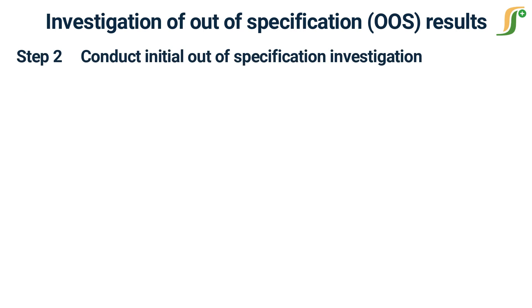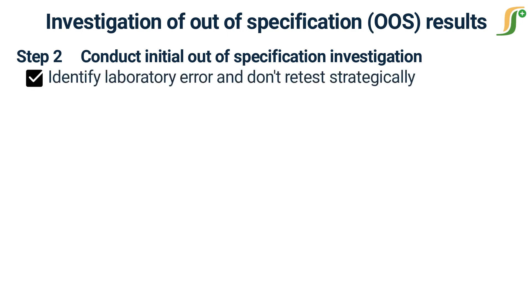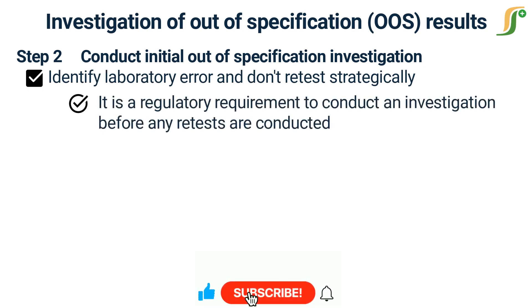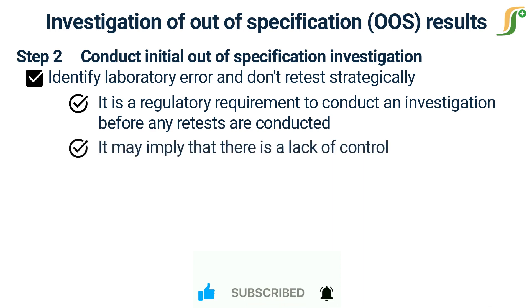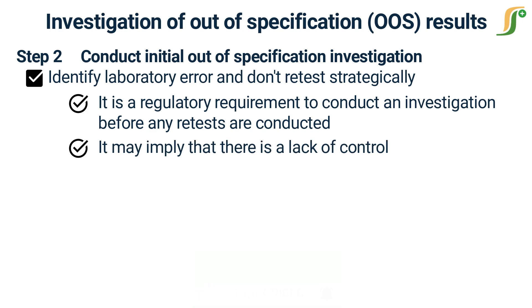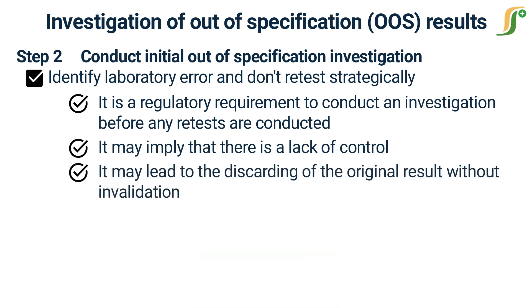The exact cause of an out-of-specification event can be difficult to determine with certainty, and it is unrealistic to expect that analyst errors will always be documented. Simply retesting as a strategy raises three problems: it is a regulatory requirement to conduct an investigation before any retests are conducted; it may imply a lack of control; and the laboratory may not address the causes of possible failures, allowing those conditions to recur on the retest. It may also lead to the discarding of the original result without invalidation. Therefore, it is essential that a laboratory predetermines its course of action in the event of an OOS.